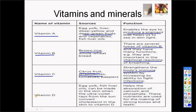Vitamin D is found in eggs and fish liver. Our body also produces vitamin D through our skin — as we walk in the sun, our body will actually produce vitamin D through the UV rays. Vitamin D actually helps us to absorb calcium and phosphate in our body, and also helps our emotional state.